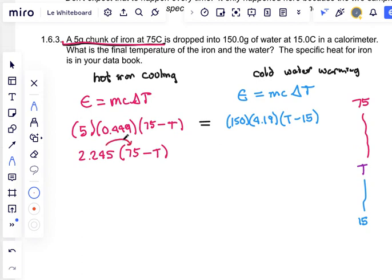It's still multiplied by 75 minus T, and this 2.245 when a number is right outside brackets like this, it distributes through them. So this is going to multiply the 75 and also the minus T. 2.245 times 75 is 168.375 minus 2.245T.